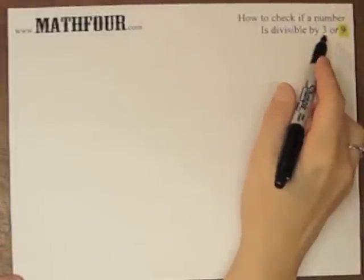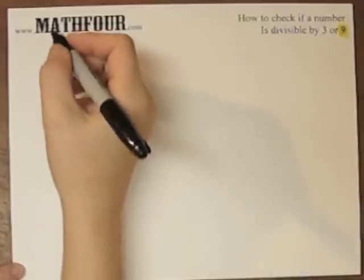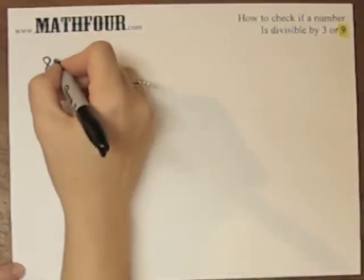So we just did how to check if a number is divisible by 3, and now we're going to do if it's divisible by 9.